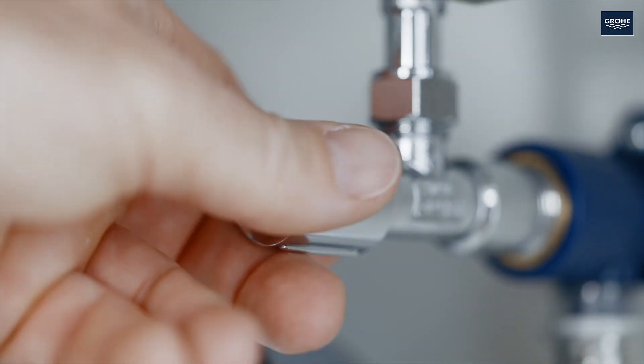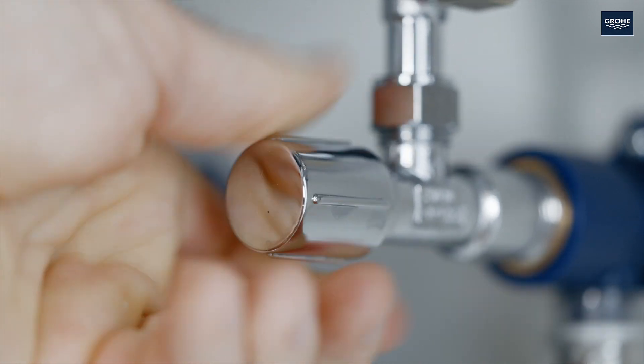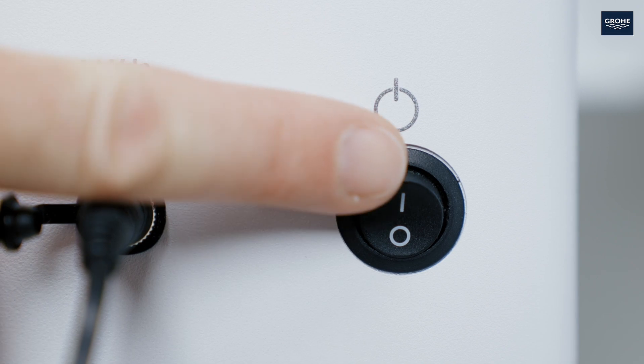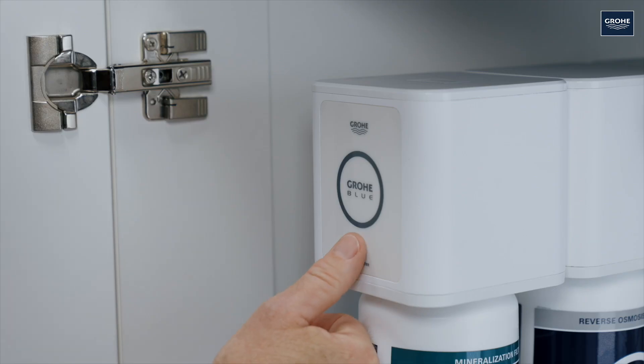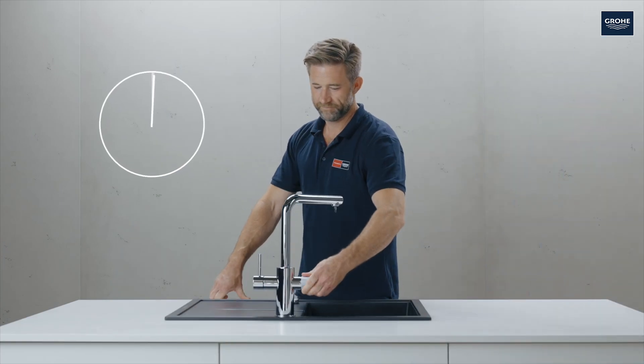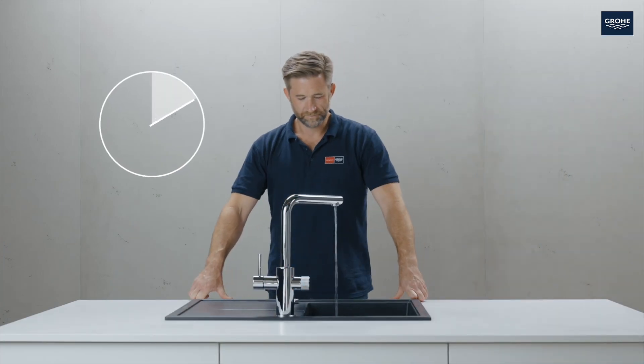Then unscrew the angle valves and switch on the filter system. Now rinse for 10 minutes and check everything again for tightness and leaks.